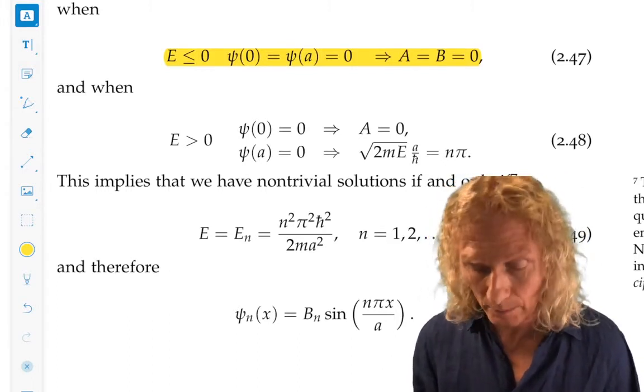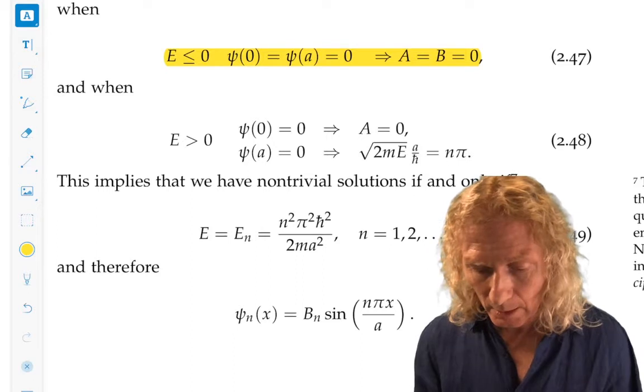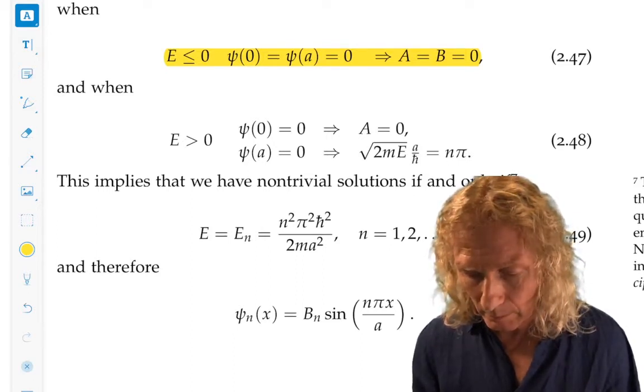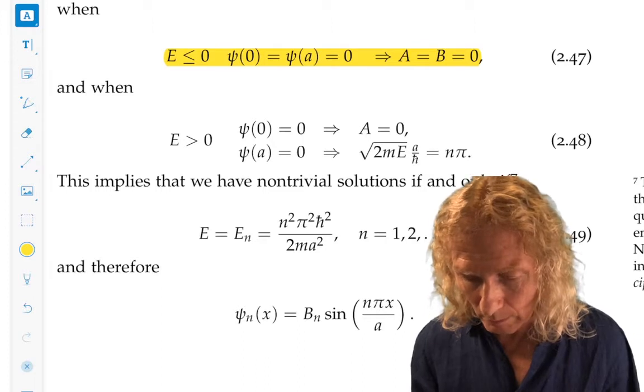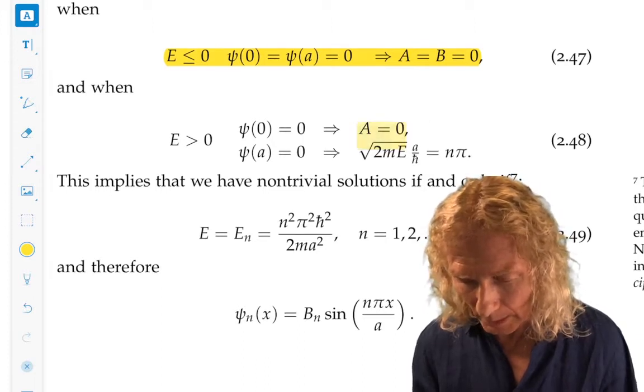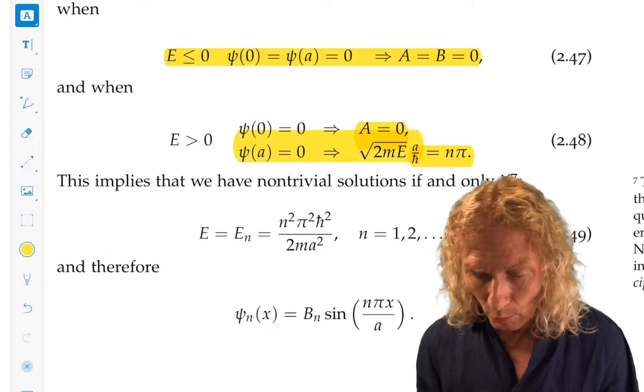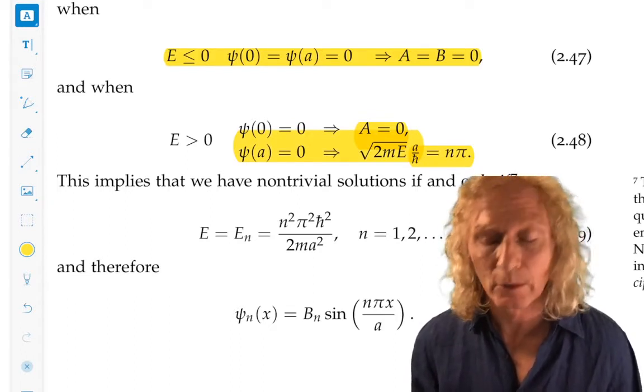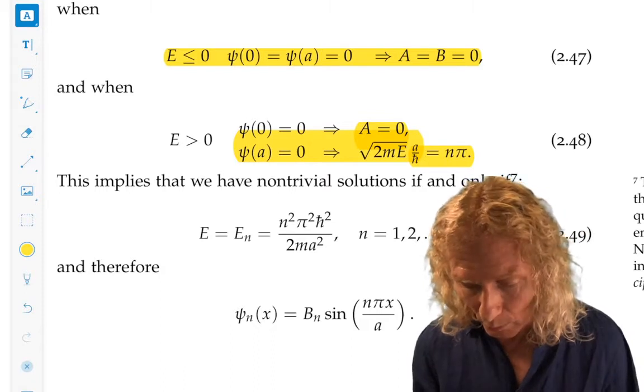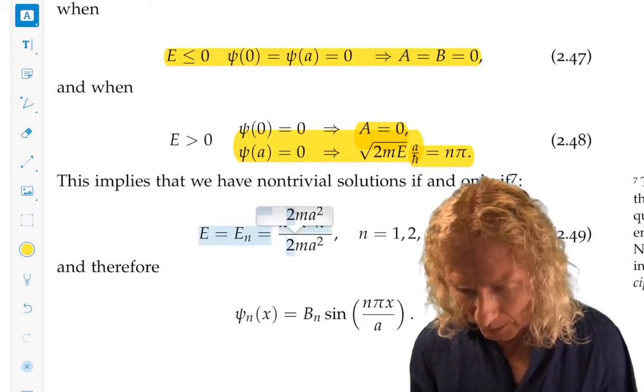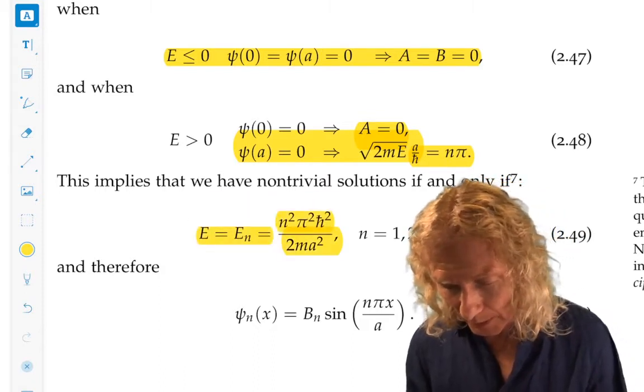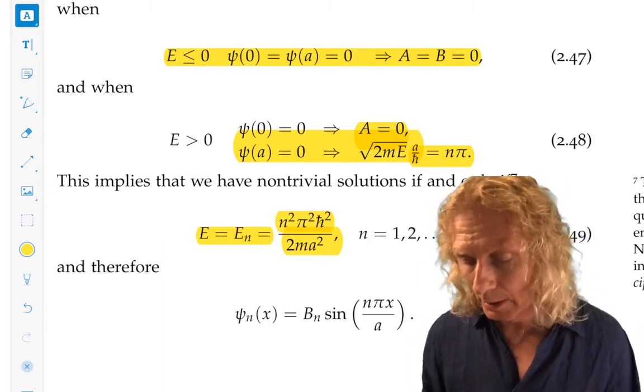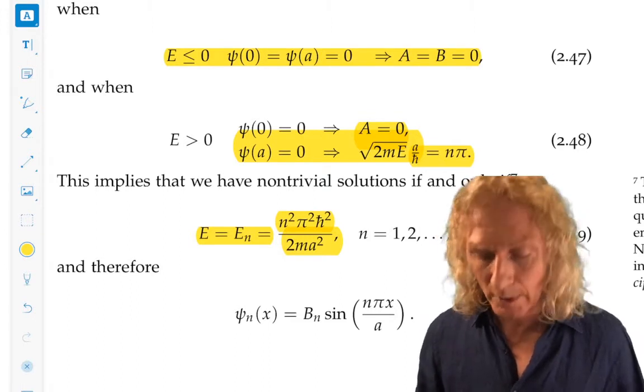For E greater than zero, if we satisfy the boundary conditions, we get A equals zero, and this other condition, which implies that we're only going to have non-trivial or non-zero solutions when E is En, which is n squared pi squared h bar squared over 2ma squared, for n equal 1, starting at 1, 2, 3, 4, and so on.